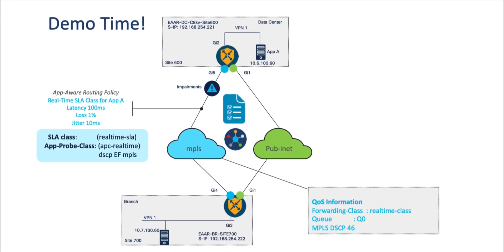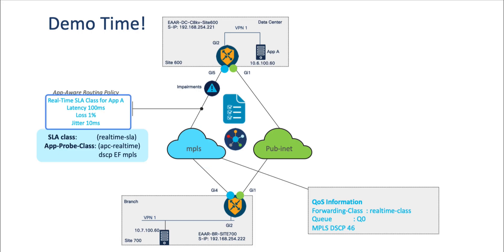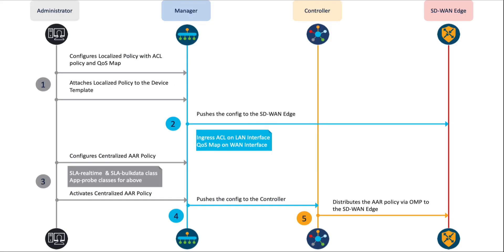Real-time traffic prefers MPLS T-Lock with a user-defined SLA. If the SLA is not met, it fails over to public Internet T-Lock. Localized policy and centralized application-aware routing policy are already configured inside SD-WAN manager.